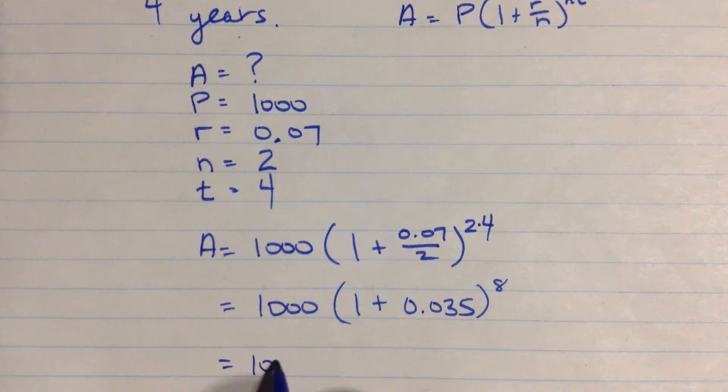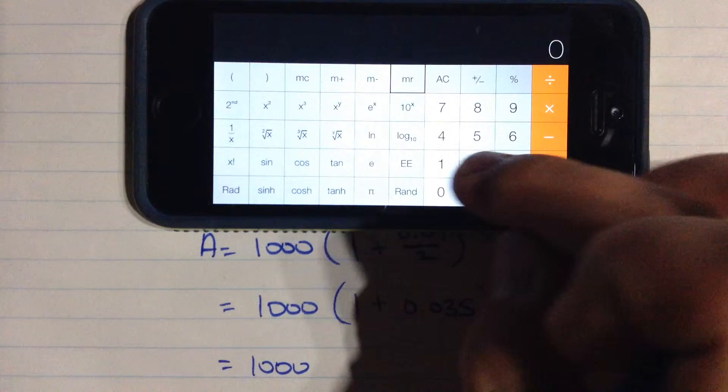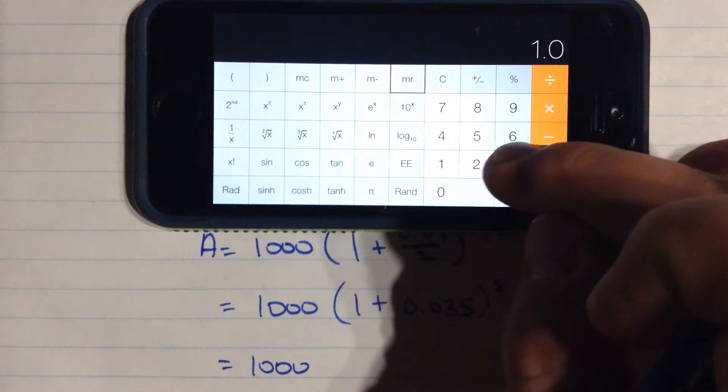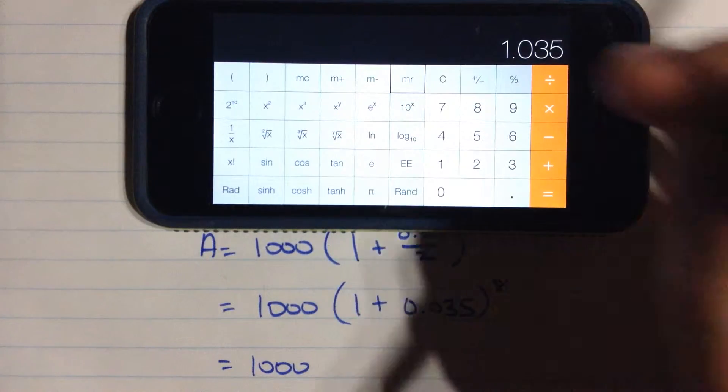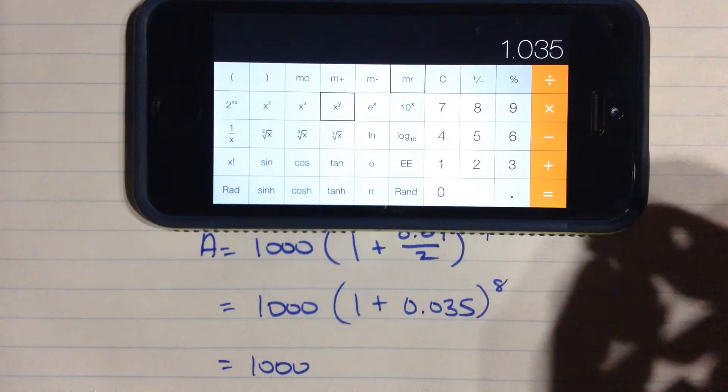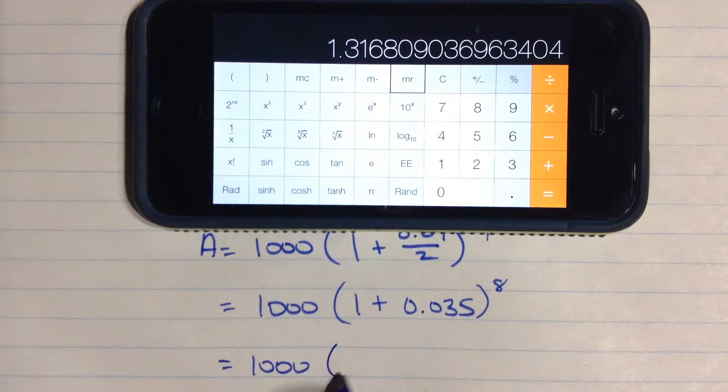So that's 1,000 times, well, let's see what this is here. We're going to take 1.035, that's these two things added together, and we're going to raise it to the exponent 8. Press equals, and I get about 1.3168.